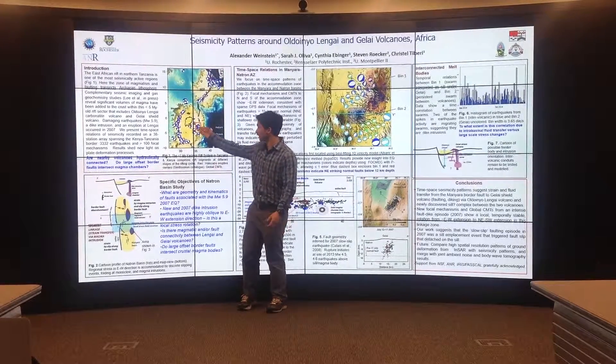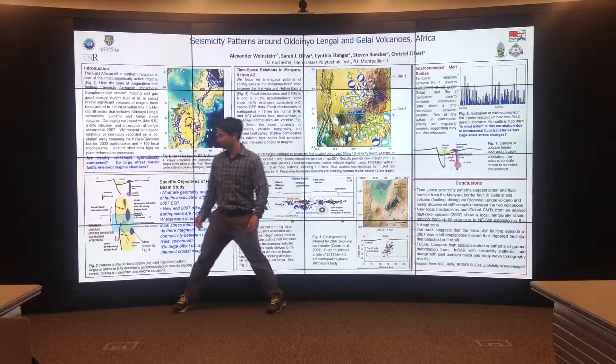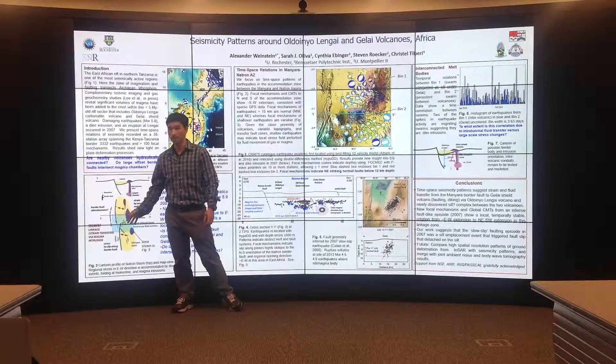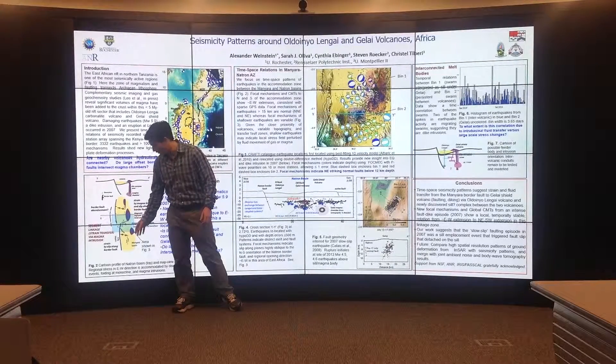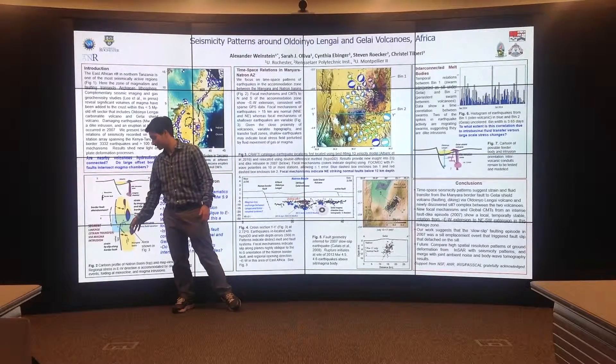The Natron Basin is located here in the East African Rift. The East African Rift is a zone of east-west extension, where stress is accommodated both by faulting and magmatics.